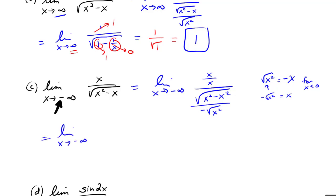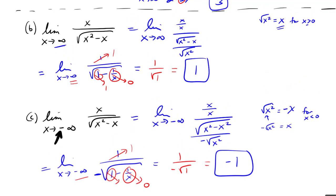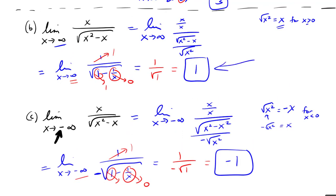That negative on the outside is the only difference. The numerator becomes one; the denominator becomes negative square root of one minus one over x. Taking the limit, the numerator goes to one, the inside goes to one, and one over x squared goes to zero — so I get one over negative square root of one, which is negative one. Interestingly, as x goes to positive infinity we get one, and as x goes to negative infinity we get negative one: another example of a function with two different horizontal asymptotes.